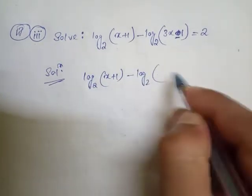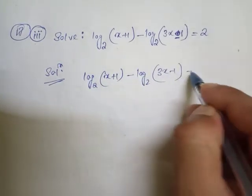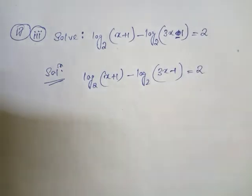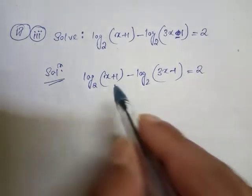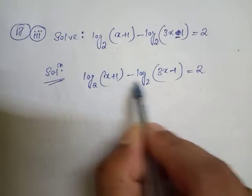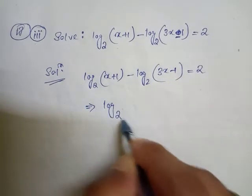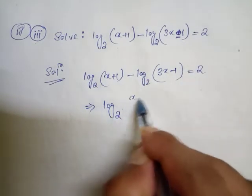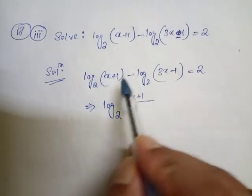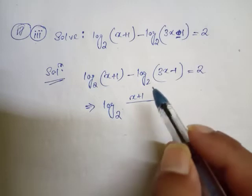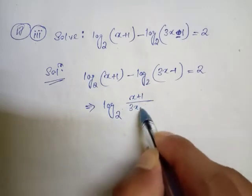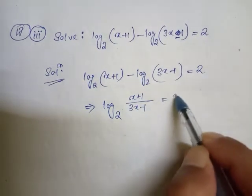There is log a minus log b. The formula is log m minus log n equals log(m/n). So we get log base 2 of (x+1) divided by (3x-1) equals 2.